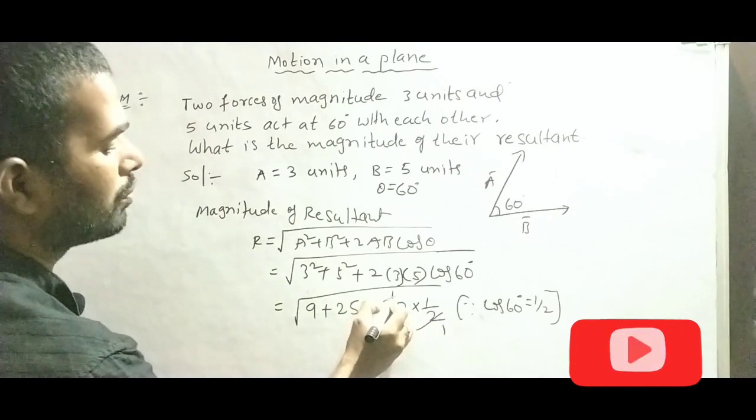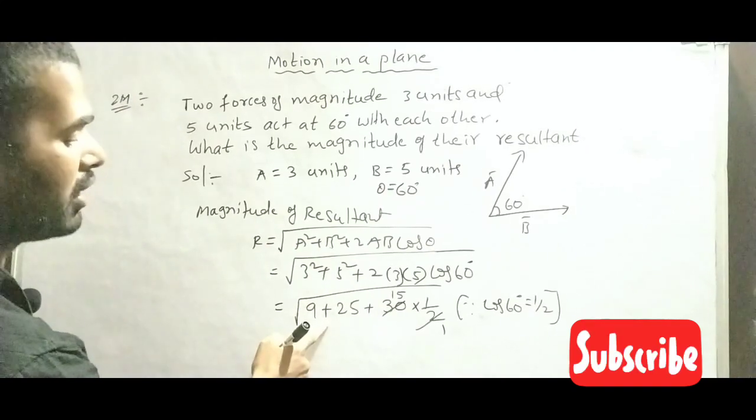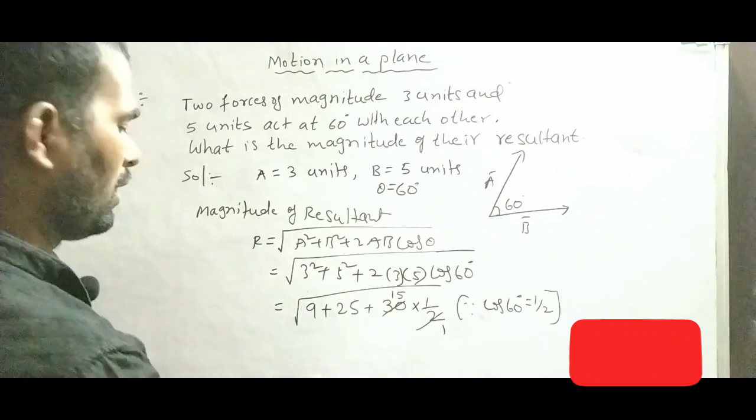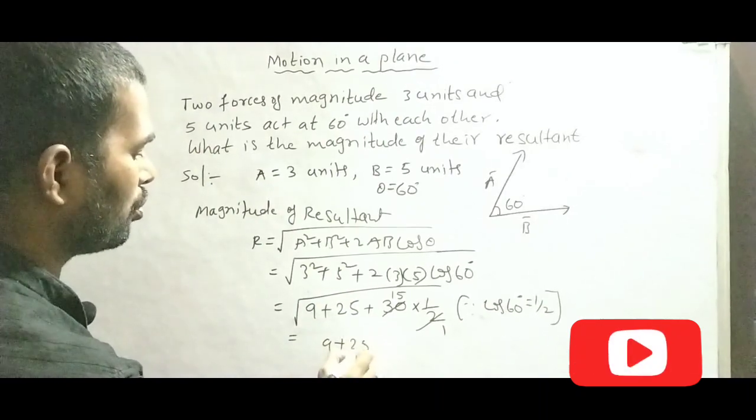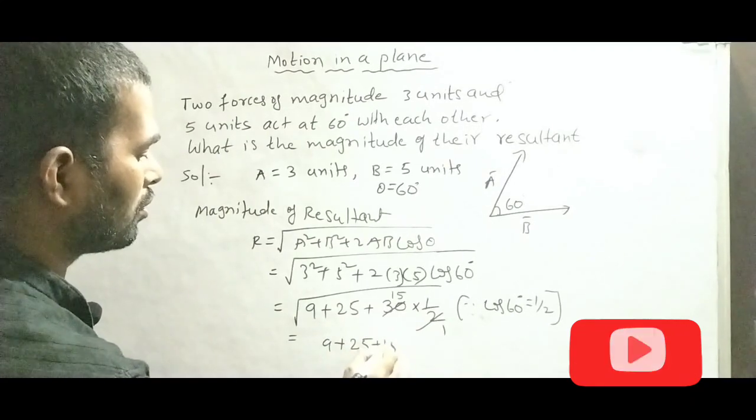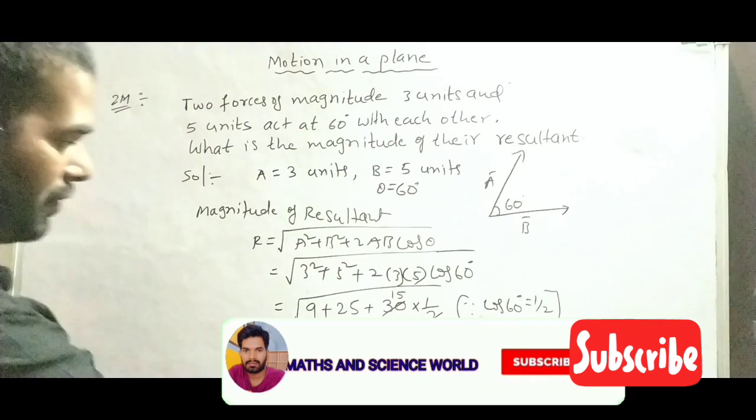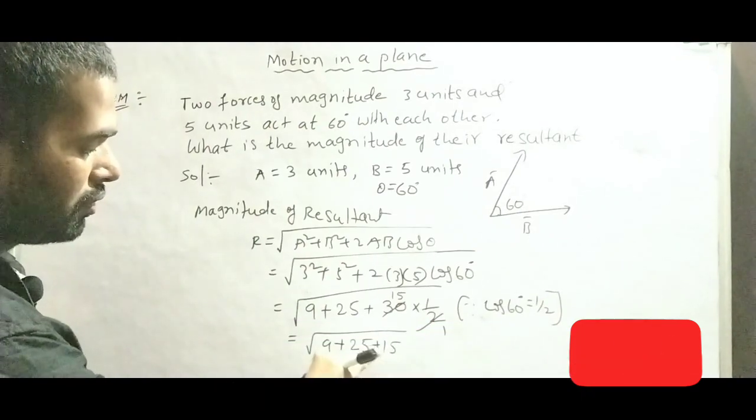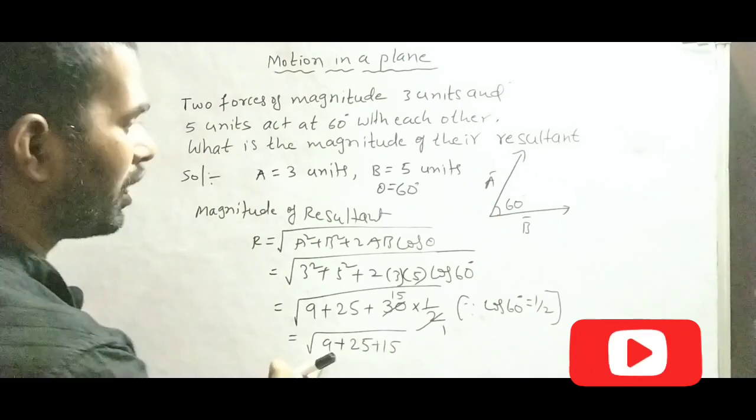Here 2 and 2, 15 are 30. 9 plus 25 plus 15. 15 plus 25 is 40, 40 plus 9 is 49.